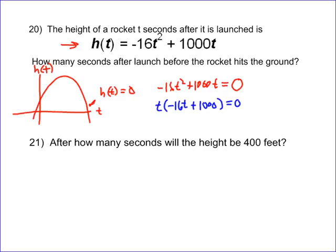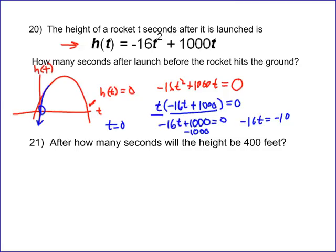So this is factored, which is nice. One of your answers is when t equals zero — that's right here on the graph. The other answer is the one I'm looking for. When does negative 16t plus 1,000 equal zero? Subtract 1,000 and you get negative 16t equals negative 1,000. Divide both sides by negative 16 and you get t equals 62.5. So after 62.5 seconds, the rocket comes back to the ground, because that's when the height is equal to zero.